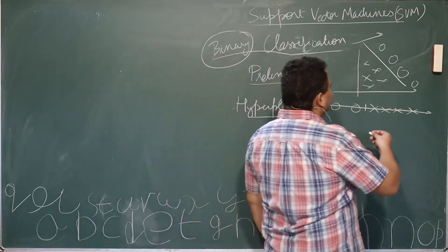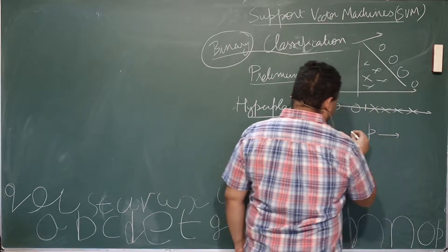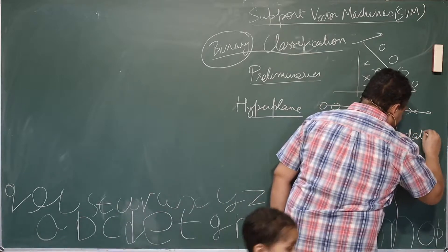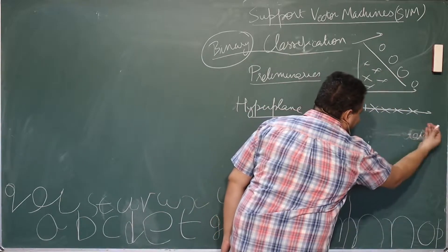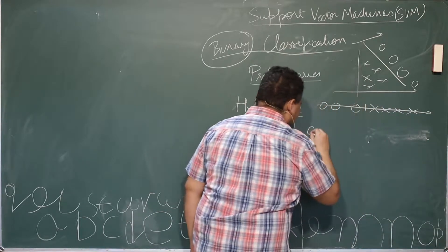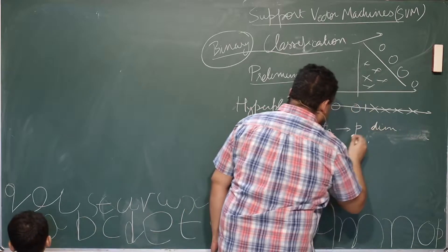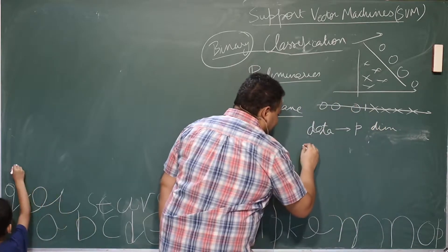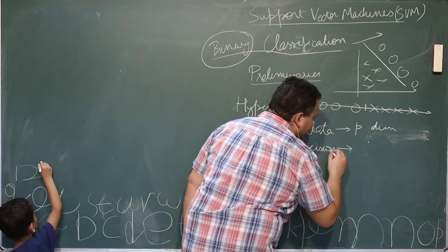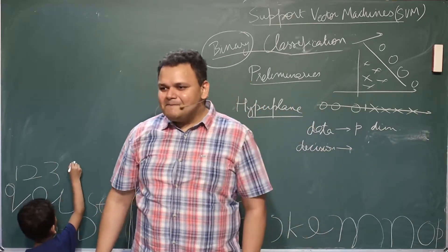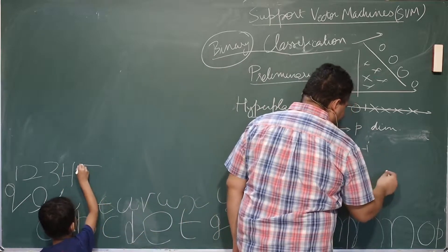If the data has p dimensions, your decision boundary is going to have p minus one dimensions.